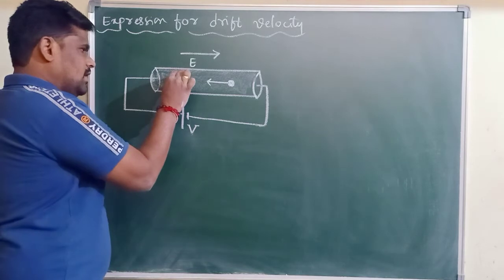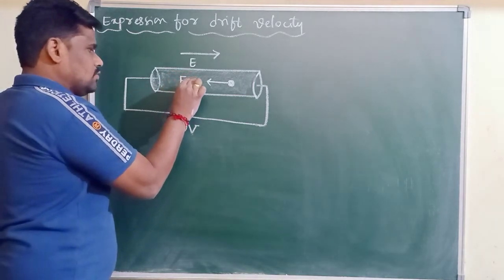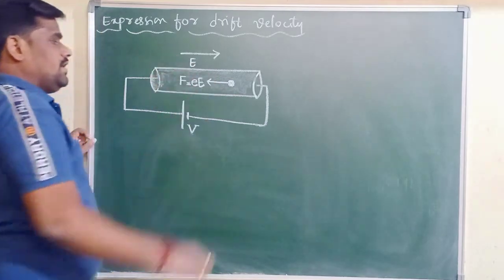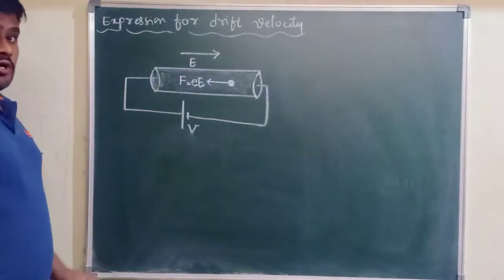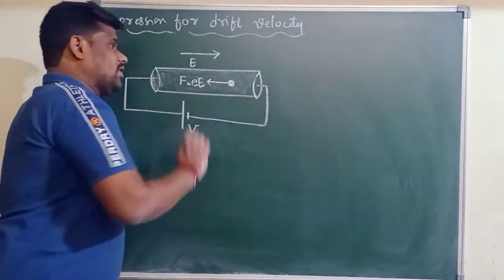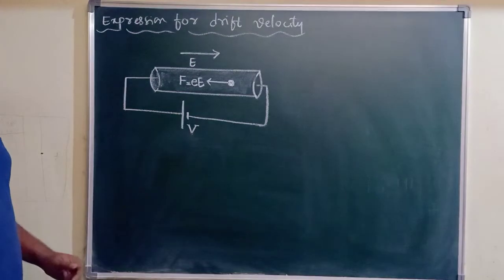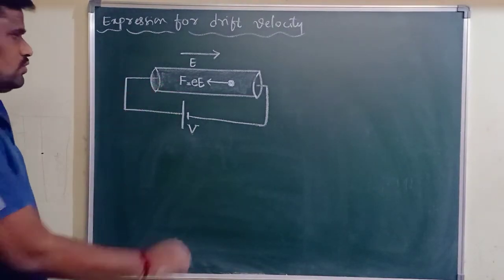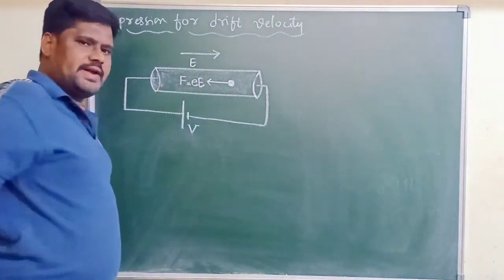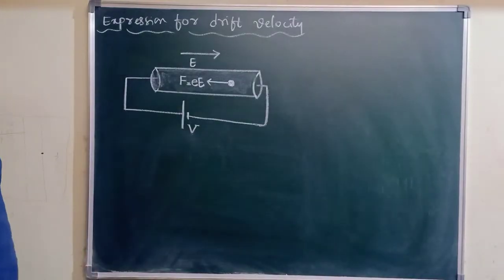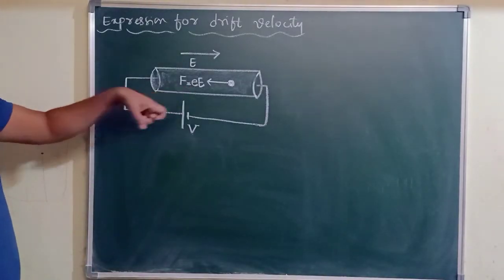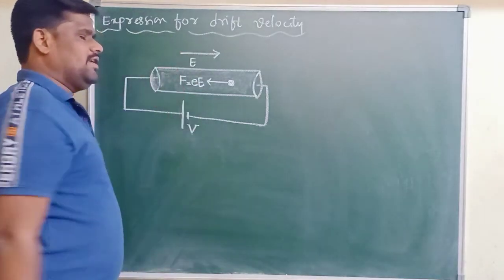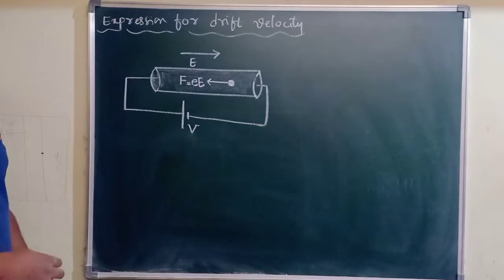This force is equal to F = eE, where small e is the charge of the electron and capital E is the electric field set up in the conductor.